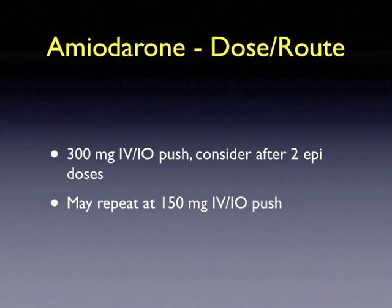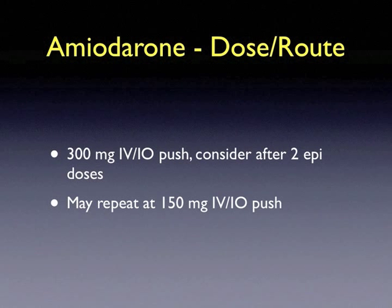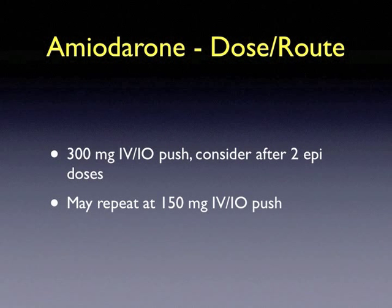The dose and route of administration of amiodarone in cardiac arrest care is a 300 milligram intravenous or intraosseous push. Consider using this after two epinephrine doses, or as soon as possible in a ventricular fibrillation or pulseless ventricular tachycardia arrest. You may repeat this dose at 150 milligrams intravenous or intraosseous push.